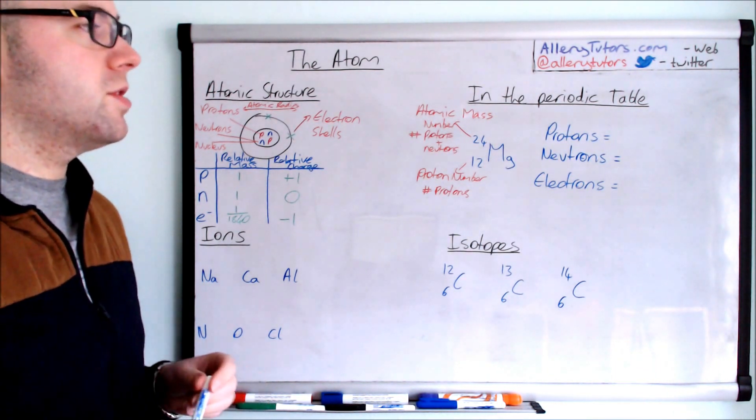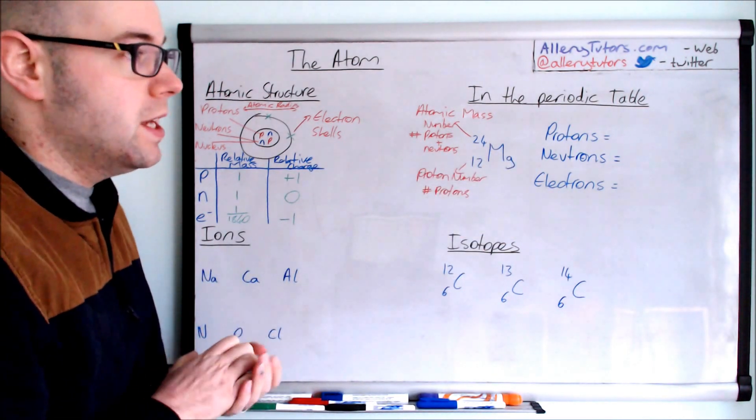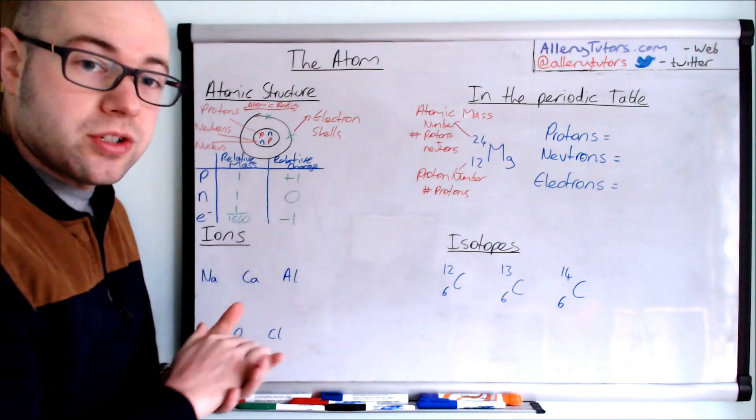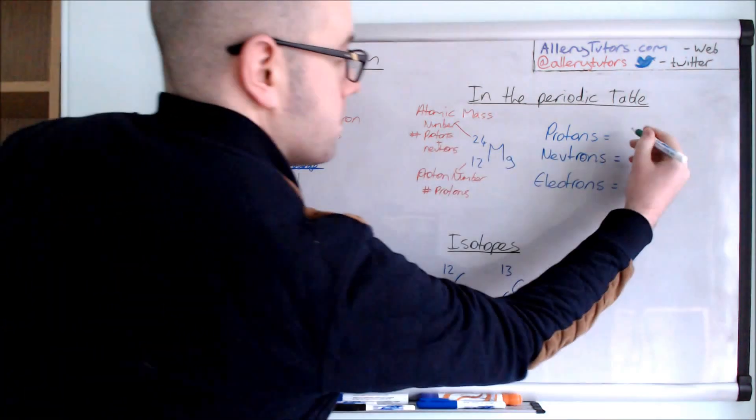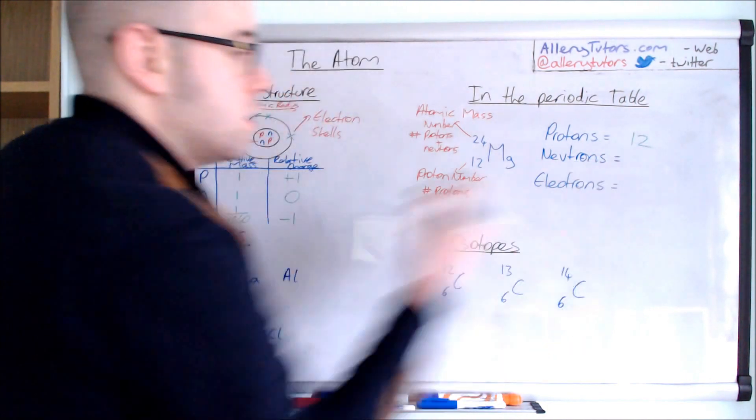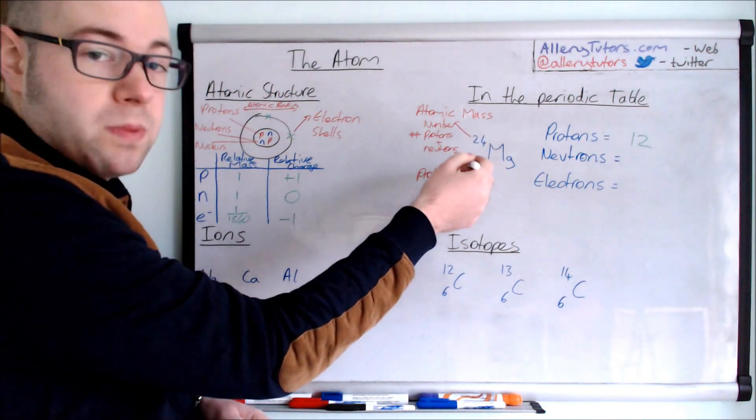So we're just going to look at the number of protons, neutrons and electrons in this particular example. So the number of protons is just 12 in this case. And the number of neutrons, again, is the bigger number minus the smaller number. In this case, atomic mass number minus the proton number, which is going to be 12 in this case.